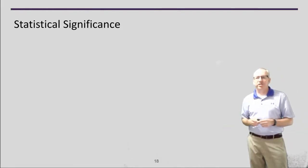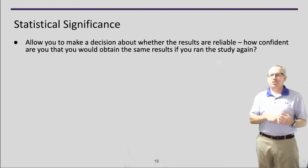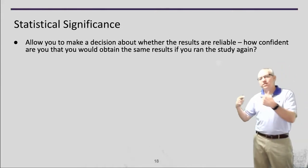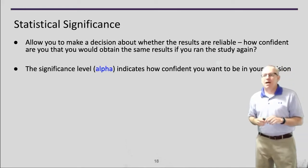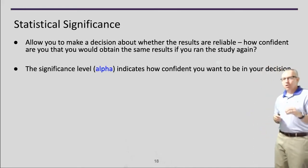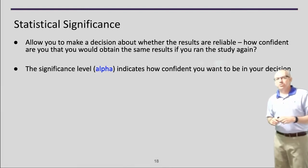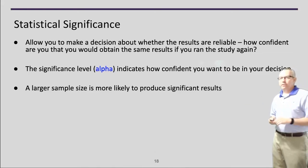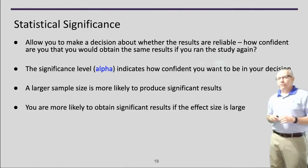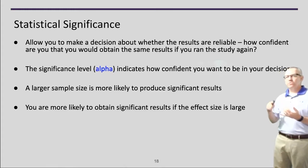Statistical significance allows you to make a decision about whether your results are reliable. How confident am I that running this study again in a different setting would produce the same results? The alpha level tells you how confident you want to be. Choosing 0.01 versus 0.05 means a 1% versus 5% chance of random error causing the result. A larger sample size is more likely to produce significant results, and you're also more likely to get significant results if the effect size is large.